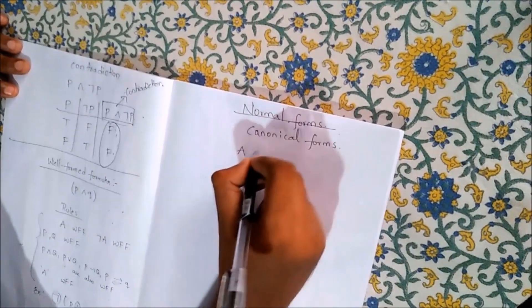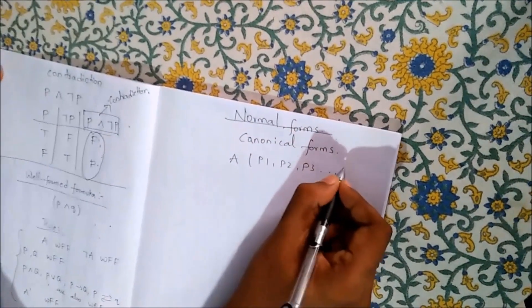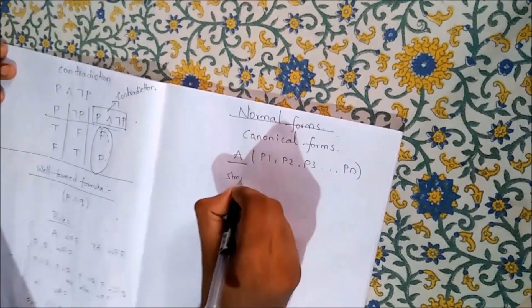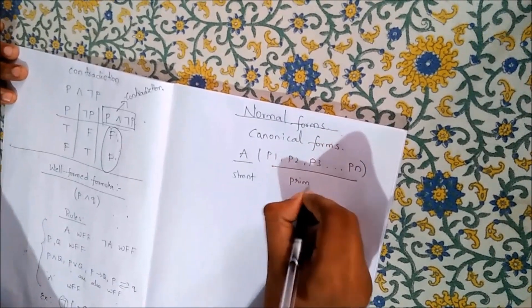Consider a statement, where A is the statement, P1, P2, so on, Pn are primitive variables.